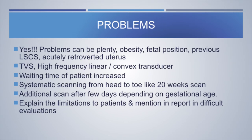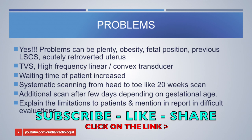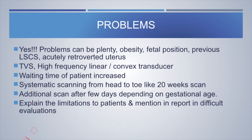Problems can be plenty, especially with obesity, fetal position, previous LSCS, or an acutely retroverted uterus. Transvaginal scanning generally helps in most of these patients. After previous LSCS, the uterus may be vertically oriented with an elongated cervix, making TVS images difficult; high-frequency linear or convex transducers may help. Endovaginal scanning is most useful, especially when an abnormality is suspected. The patient's waiting time may increase — sometimes you ask them to wait an hour, return in the evening, or come back the next day.